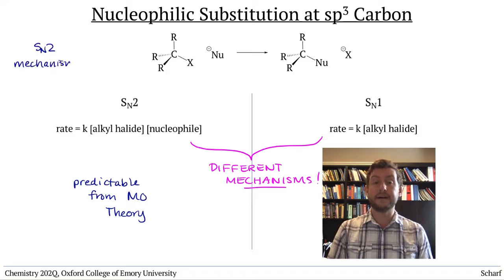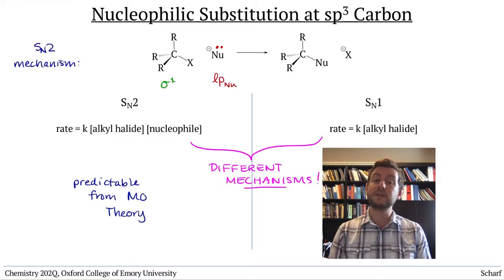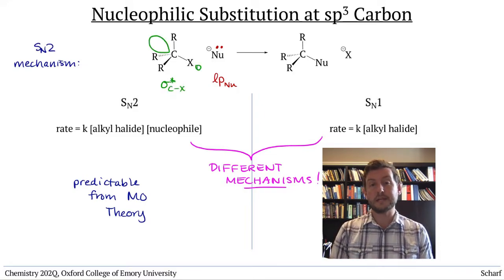The HOMO of the nucleophile, a lone pair on the nucleophile usually, must interact with the LUMO of the electrophile. Here, that's the sigma star orbital between carbon and halogen, which is largest on the carbon atom.